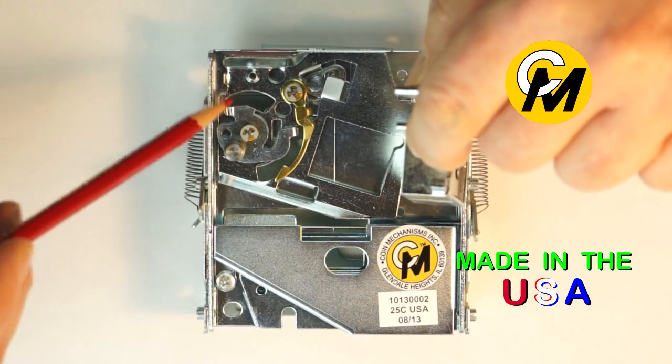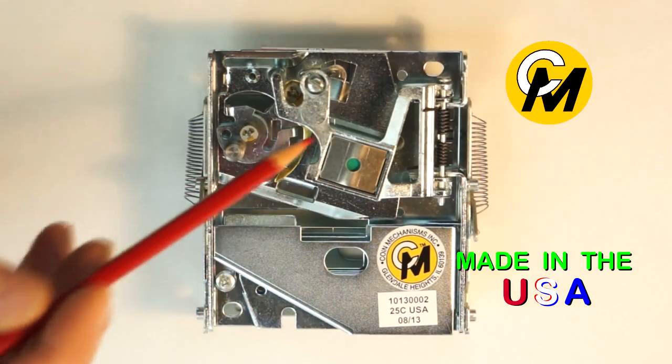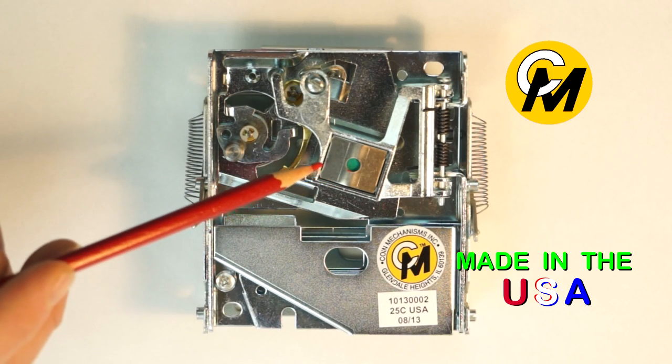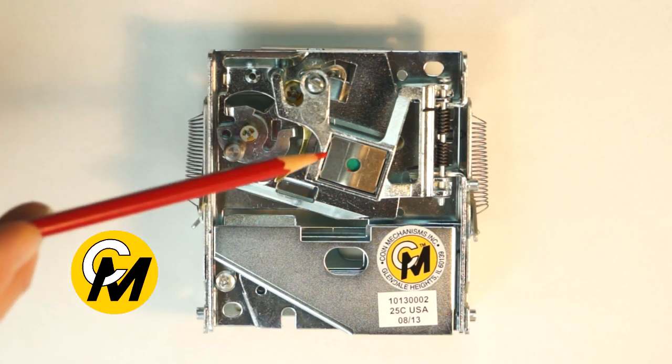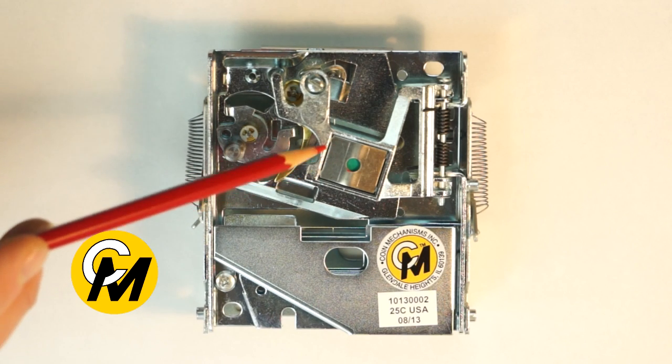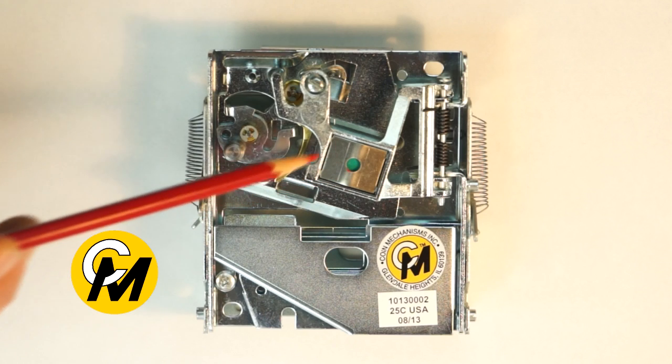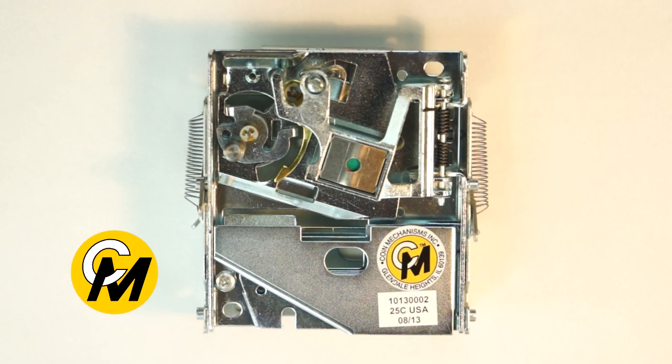Once a coin is delivered to the rail, it has to go past this magnet assembly right here. This magnet assembly acts as a tri-purpose device. One is this magnet is going to stop ferrous metal coins, washers, Canadian coins, such as that Canadian coin right there.